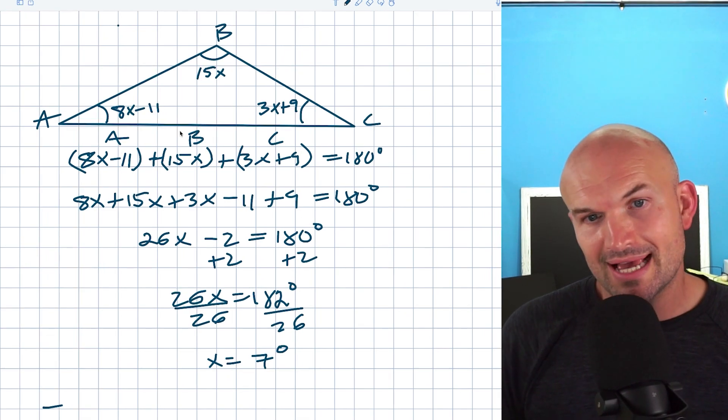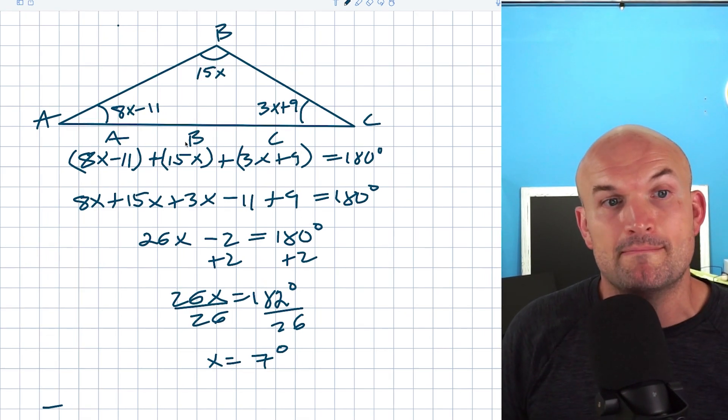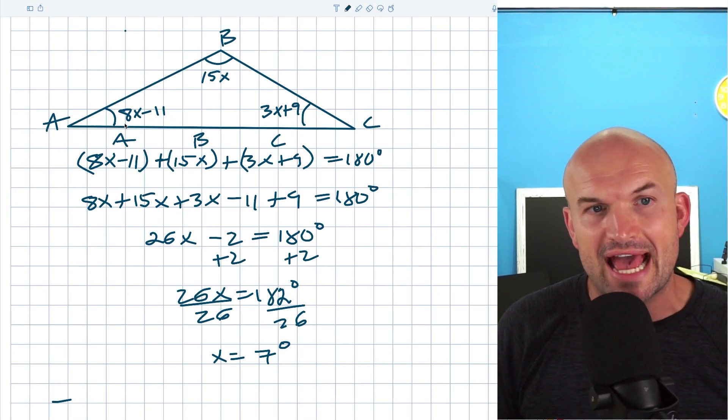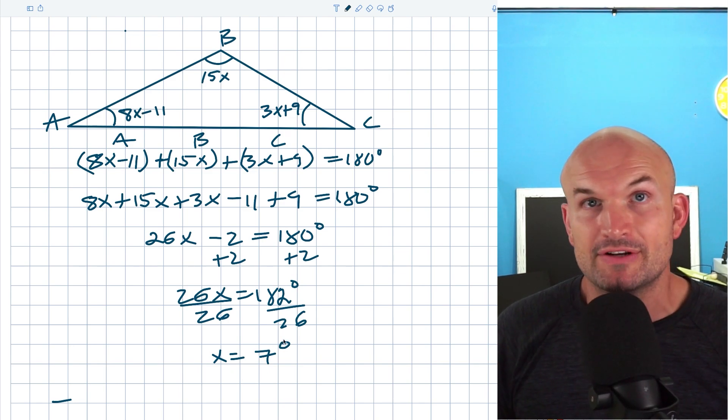We just wanted to solve for X, but if you wanted to find the measure of each of these angles, you could just replace X in either one of these angles with 7 degrees and then evaluate. But I'm just trying to keep this video straightforward, so we're not going to do that.